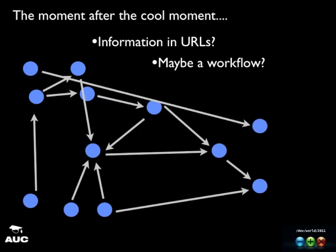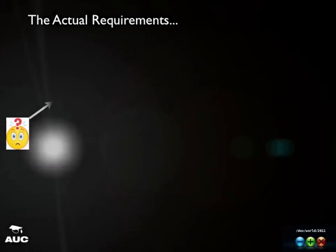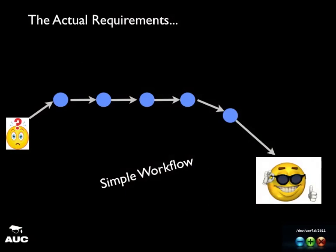The weird thing was that the actual software requirements, when we stepped back, were so incredibly simple: a basic workflow where a student has a question, a series of linear steps ensue, and the student is happy. But the discussion we were having was so completely different from that. This led to a critical question: why, if the actual requirement is so simple, was the discussion so different?